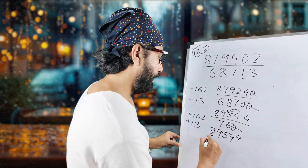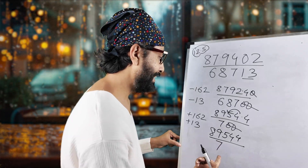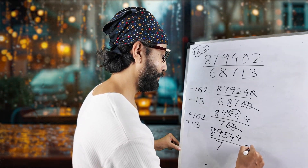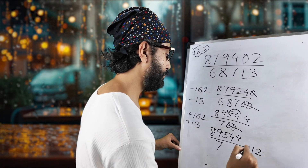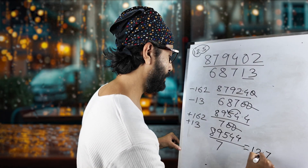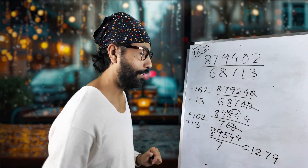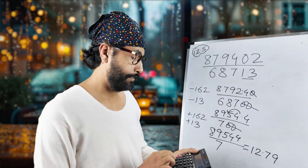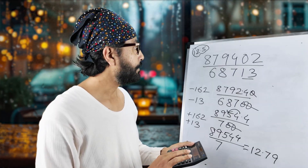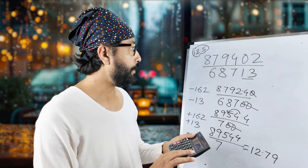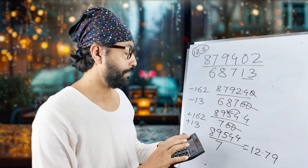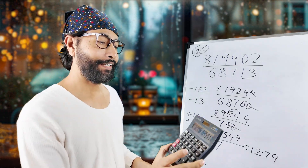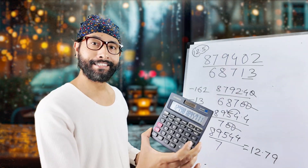Now any kid can solve 89.54 divided by 7. The final answer is approximately 12.79. Let me verify with a calculator: 8,794,02 divided by 68,713 equals 12.798 — and it matches! You can check it yourself.